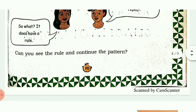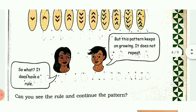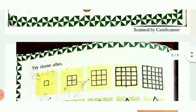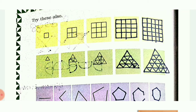This pattern keeps on growing - it does not repeat. But does it have a rule? Can you see the rule and continue the pattern? I have continued the pattern, you can also try. In the first picture they have given one square, then it increases - next it is four squares.